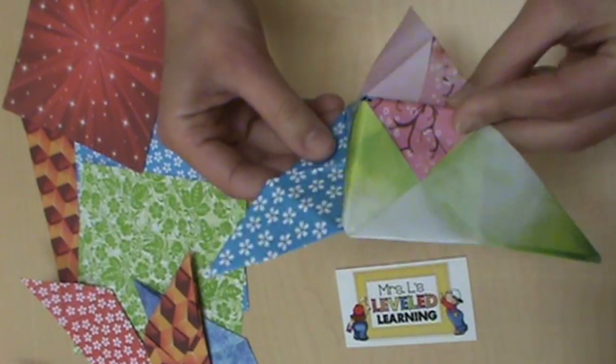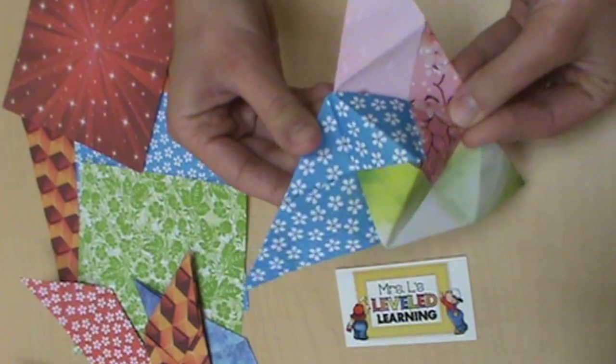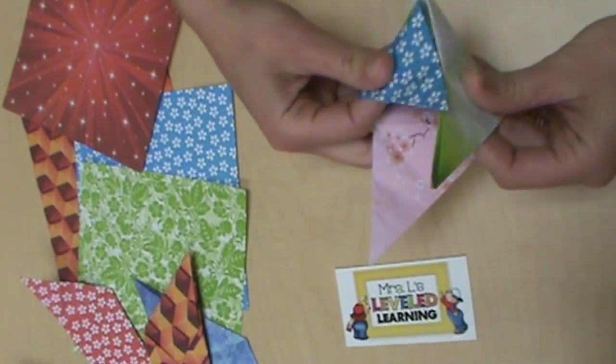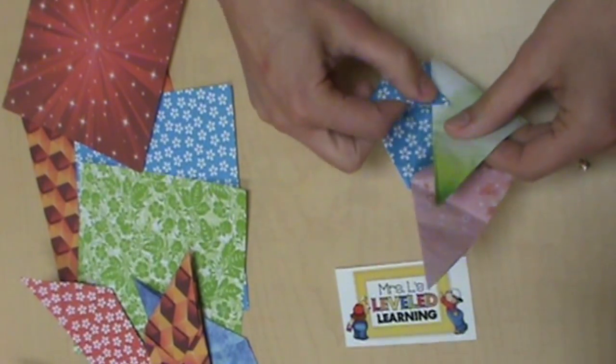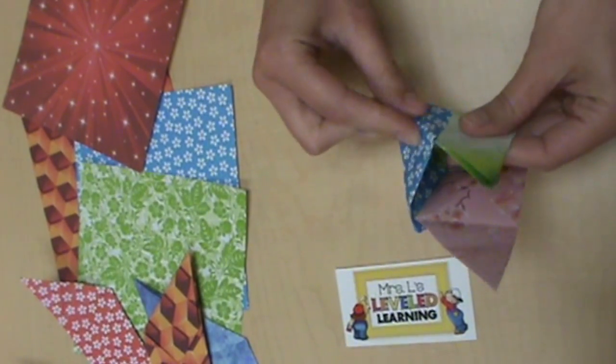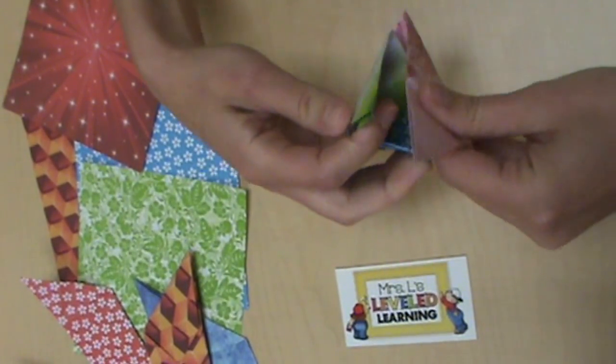See the pyramid in the middle, and how the other triangular flaps stick out from the sides. Now you're going to try and create the pyramid again in a way that covers that opening. So fold those pieces back.